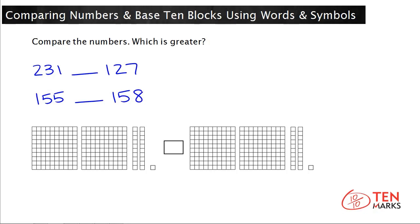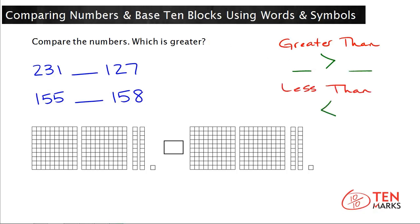Before we try any problems, let me remind you of the symbols you will need. The first symbol is the greater than symbol — it means the number on the left is greater than the number on the right. The next symbol is the less than symbol — it means the number on the left is less than the number on the right. The last symbol is the equal to symbol, which means the number on the left has the same value as the number on the right.